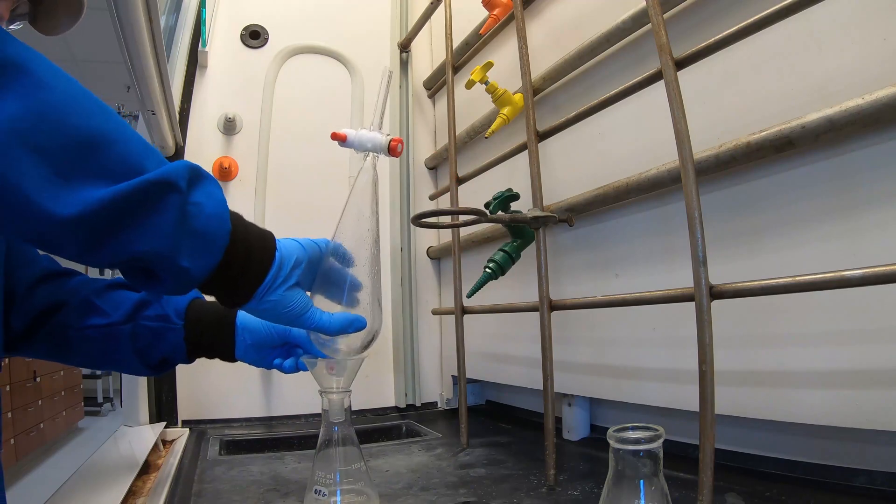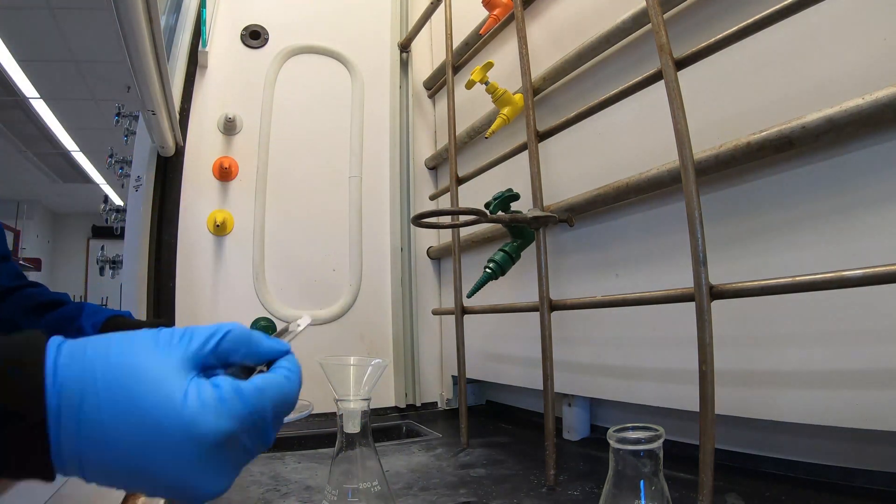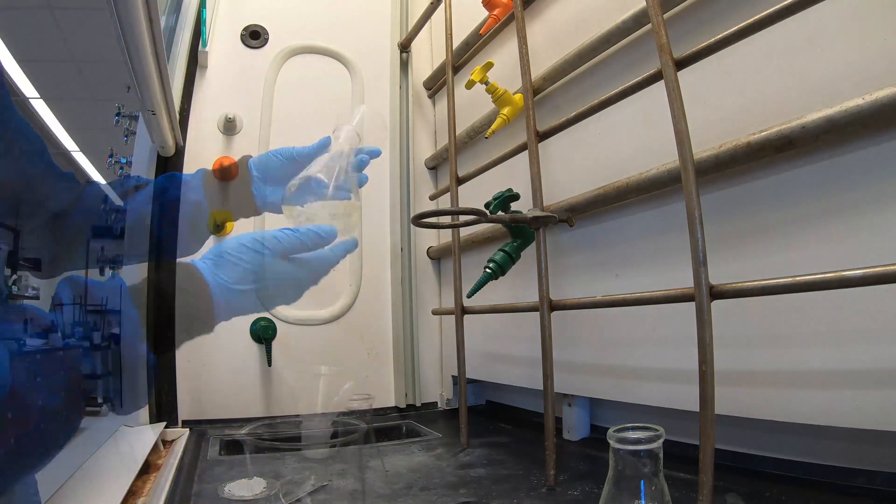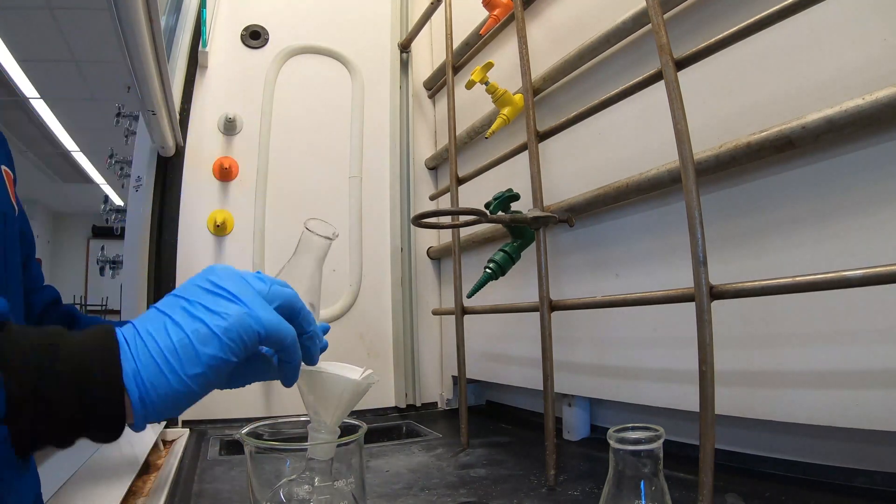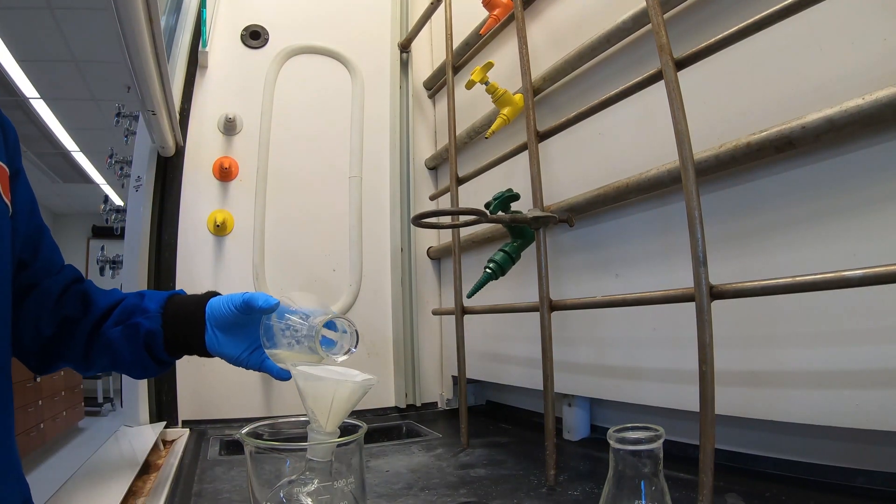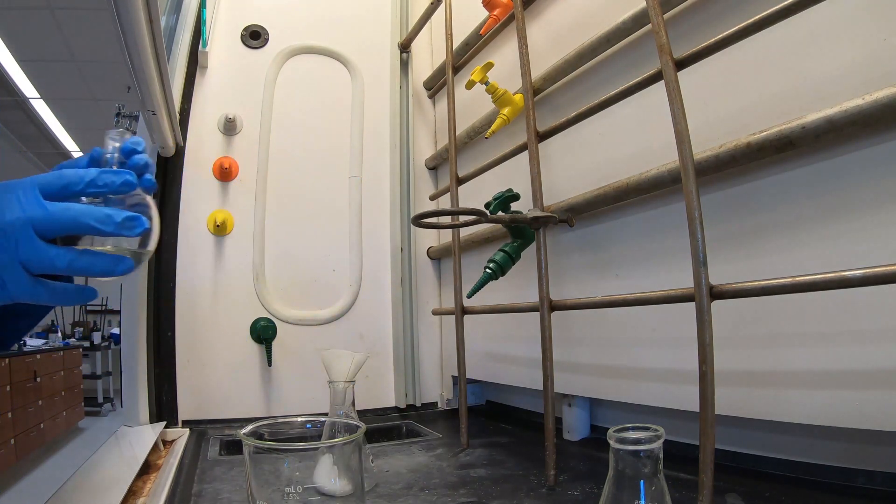Now we're going to dry your ether over magnesium sulfate to remove any lingering water. Once the water is removed, you're going to gravity filter off the magnesium sulfate from your ether. Filter into a 250 ml round bottom flask. We'll then remove the ether from your crude DEET product by using the rotavap.